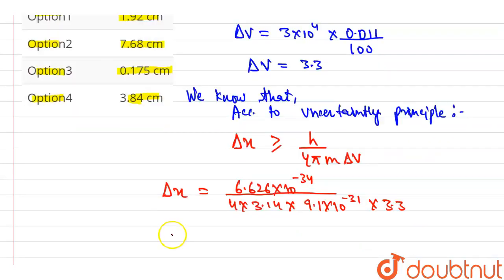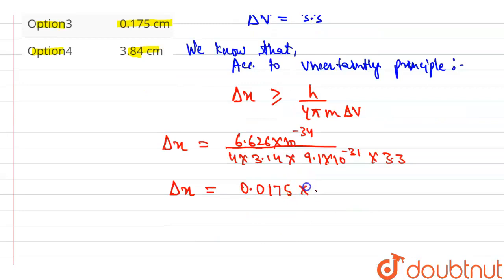Now solving, then Δx is equal to 0.175 × 10^-3 meter, and we know 1 meter is equal to 100 cm. Then Δx is equal to 0.175 cm.